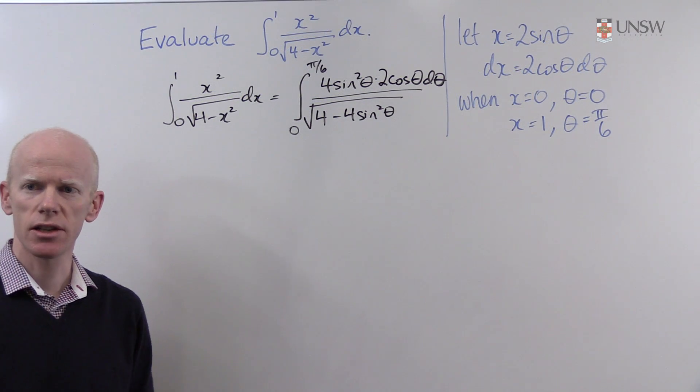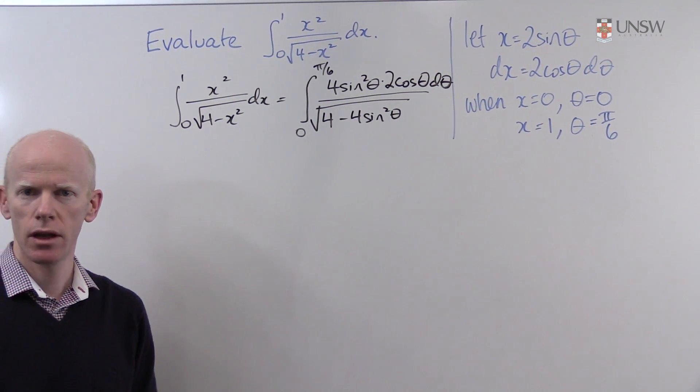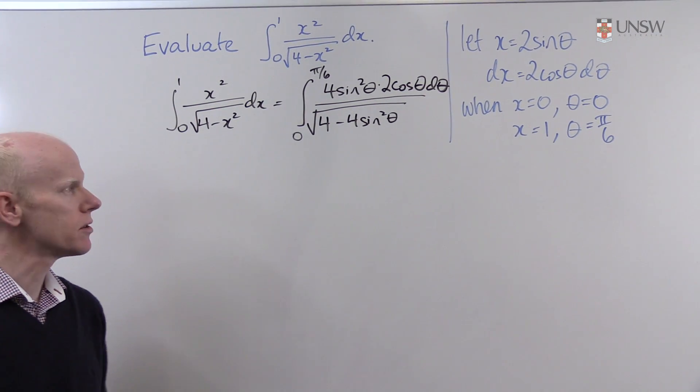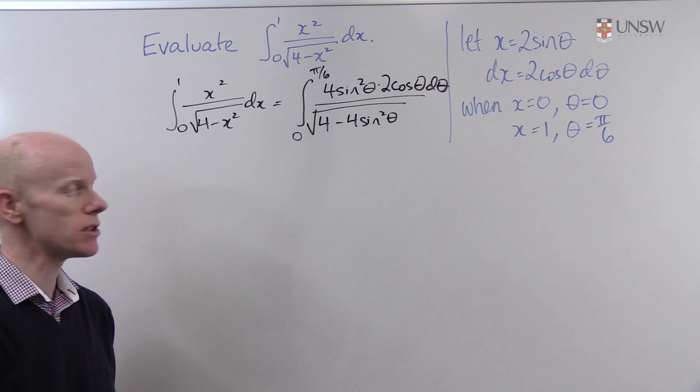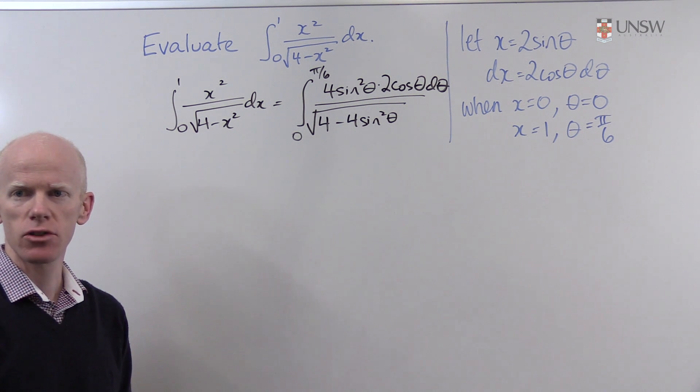Our next task is to simplify the denominator. We recognize that the 4 comes out of the square root as a 2, leaving us with 1 minus sin² θ. So the denominator will simplify to 2 cos θ.